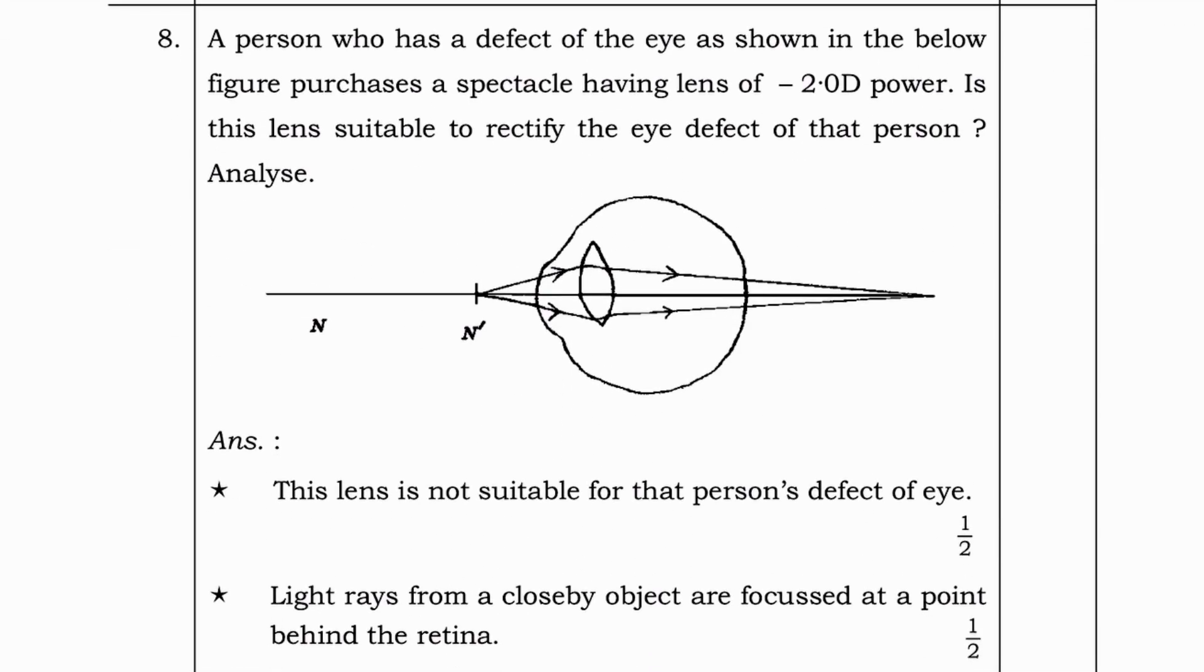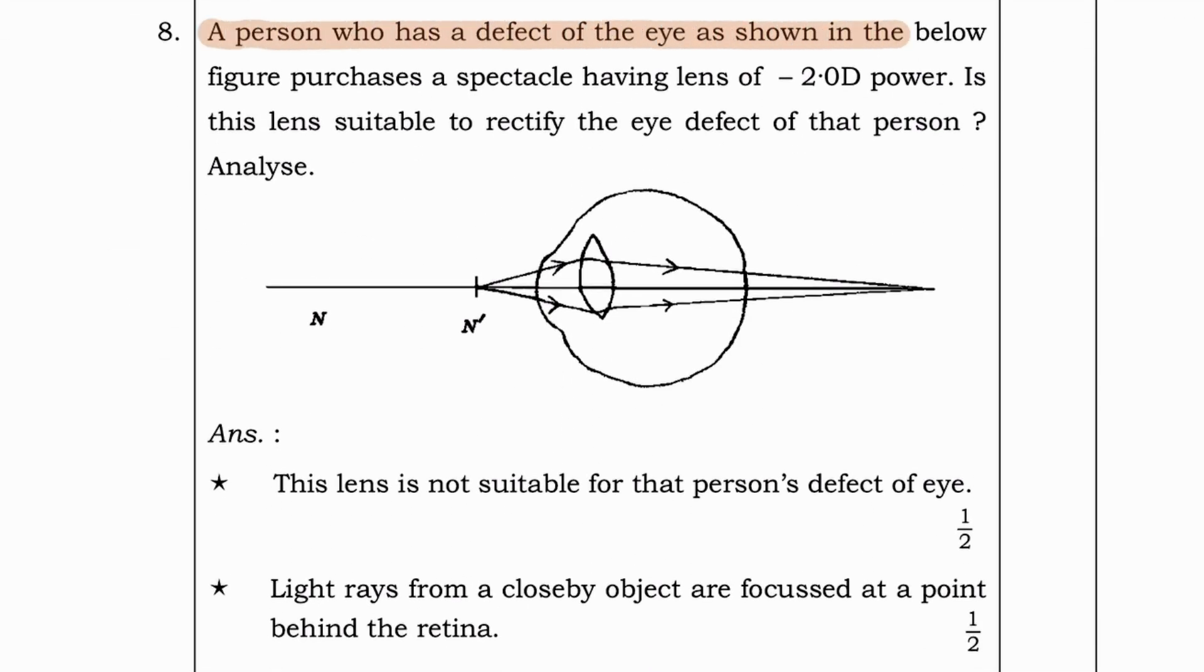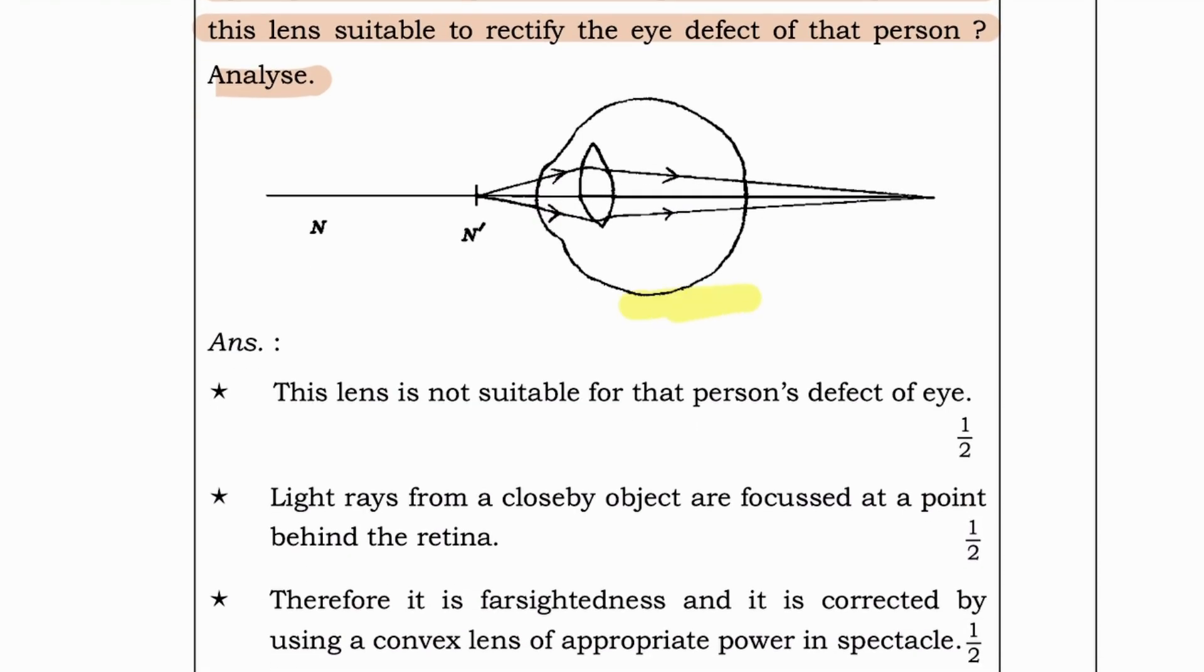Now, next question. A person who has a defect of eye as shown in the below figure purchases a spectacle having lens of minus 2.0 d power. Is this lens suitable to rectify the eye defect of that person? Analyze. They are talking about this eye diagram.